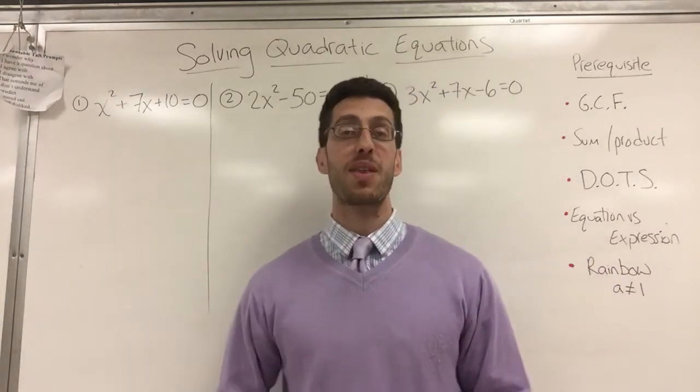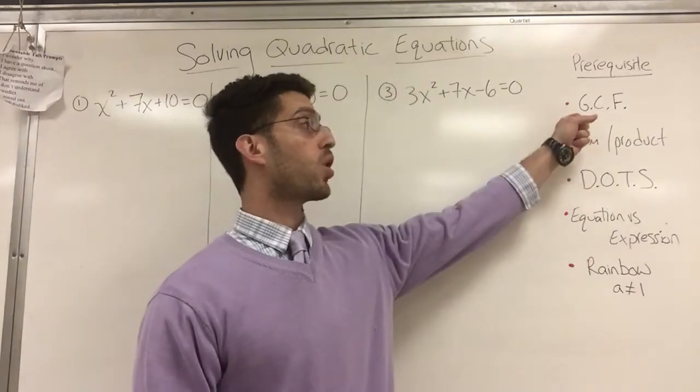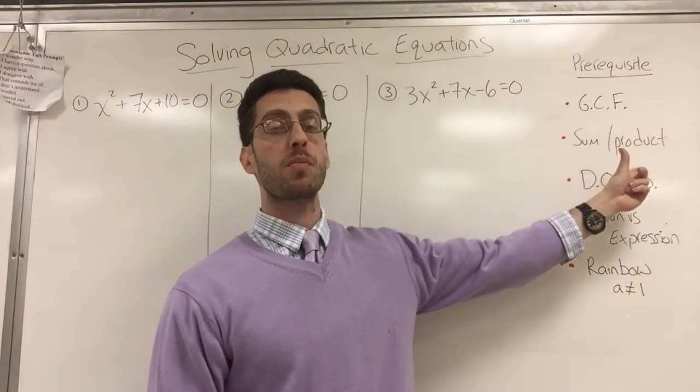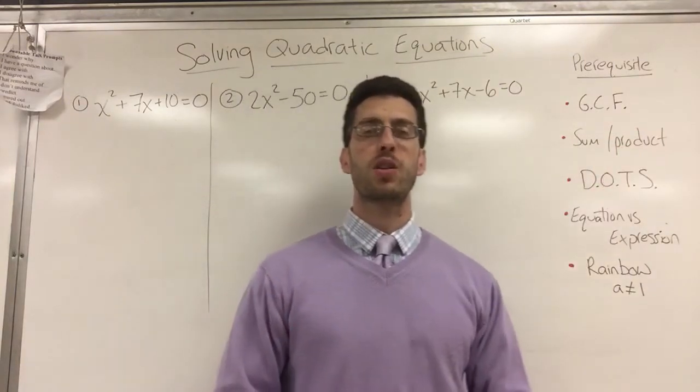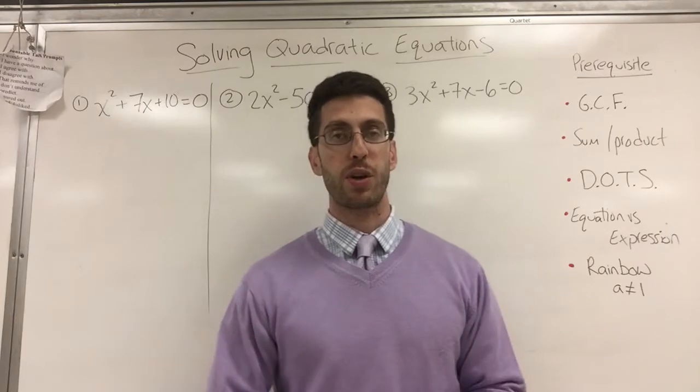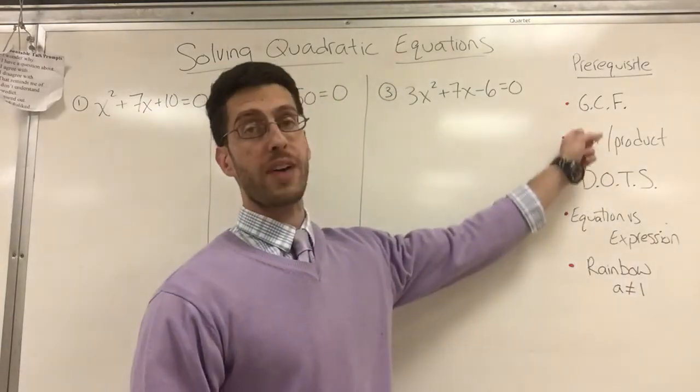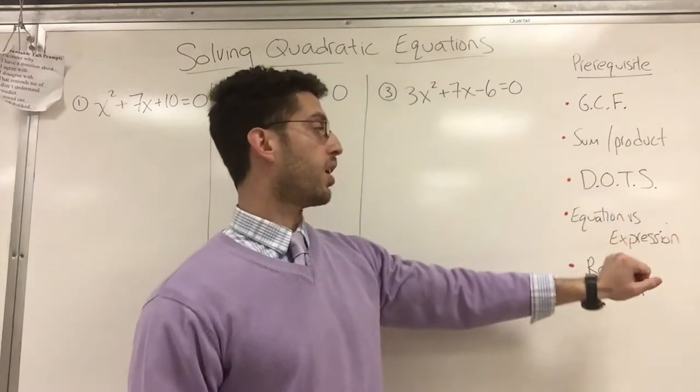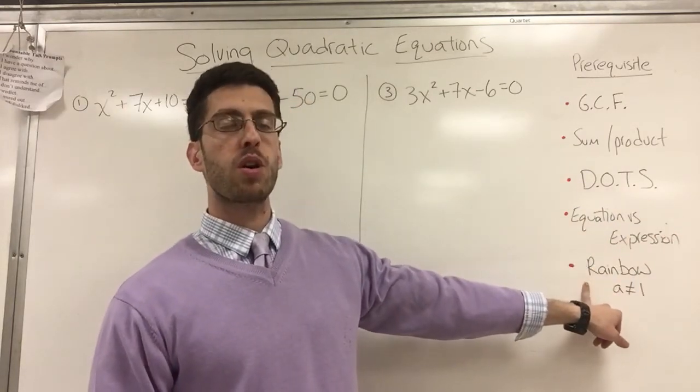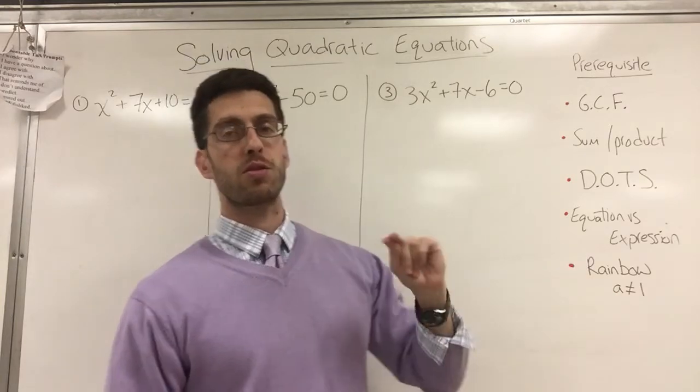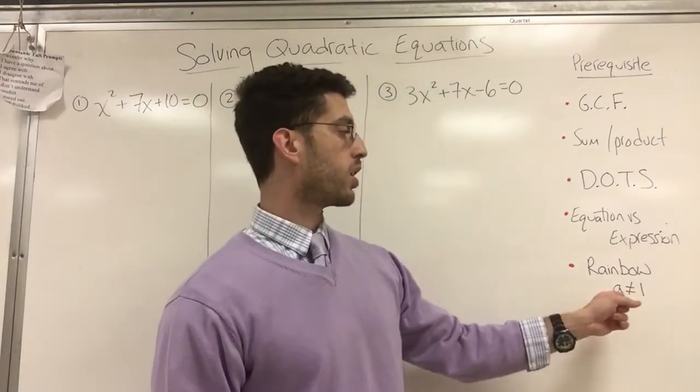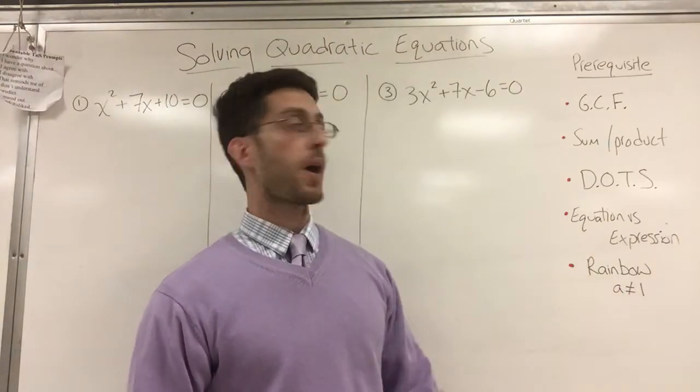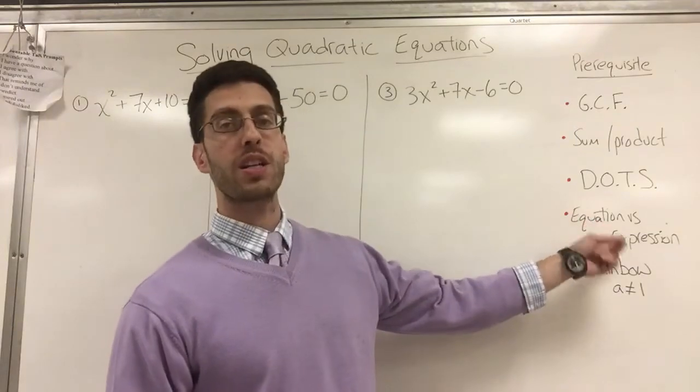Before we even get into this math, you have to have some background knowledge. You should know everything there is to know about GCF, which is a separate video using the sum product method. I might have taught this as the opposite of foil or anti-foil. So these are both ways of factoring. Also DOTS, difference of two squares, you have to know how to factor that. You should also know what I mean by rainbow. Rainbow is a method I taught in another video, but it wasn't titled rainbow. It was how to factor a quadratic when a is not equal to zero. And also you should know the difference between an equation and an expression.